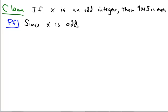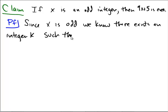we know there exists an integer k such that x is equal to 2k plus 1.